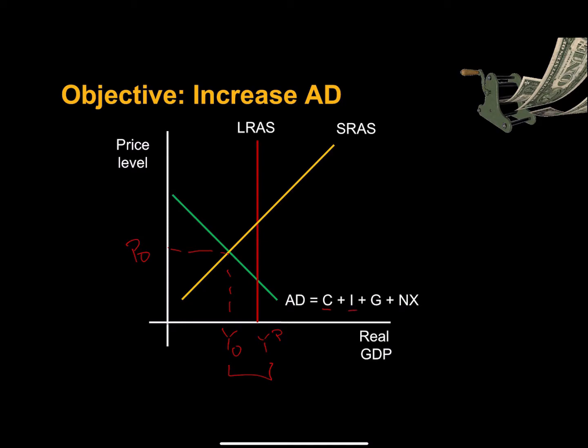Policy makers can influence aggregate demand indirectly by changing the interest rate, which is going to impact the quantity of investment by firms and to some degree the quantity of goods and services consumed by households.